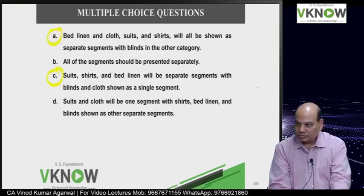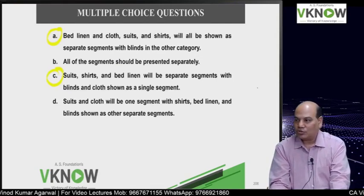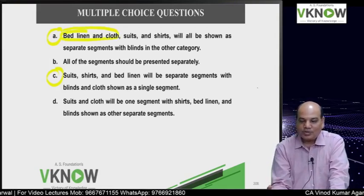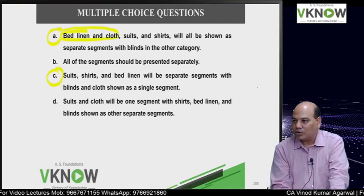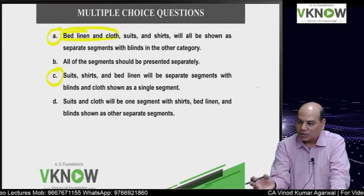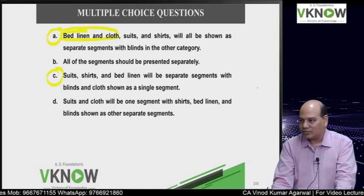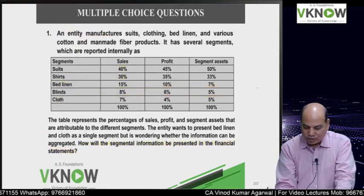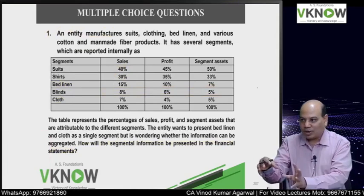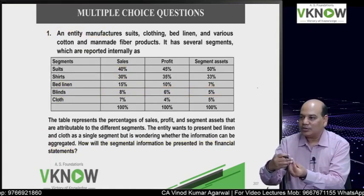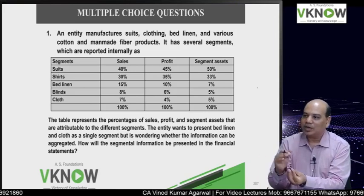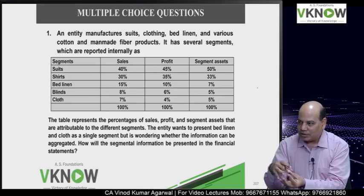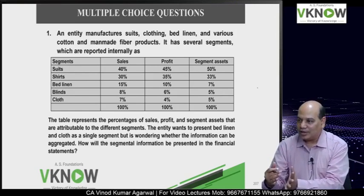Cloth can have similar characteristics with suits and shirts also, but management says they want this particular way of reporting. The CODM may say they want this particular way of reporting - management has that discretion. Even if a segment does not meet the 10% threshold, it can be aggregated with another segment if it has similar economic characteristics and majority of the aggregation criteria are the same.